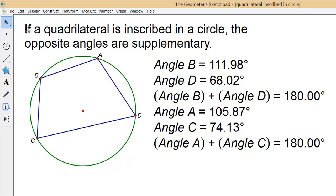The theorem that we're looking at is: if a quadrilateral is inscribed in a circle, the opposite angles are supplementary.